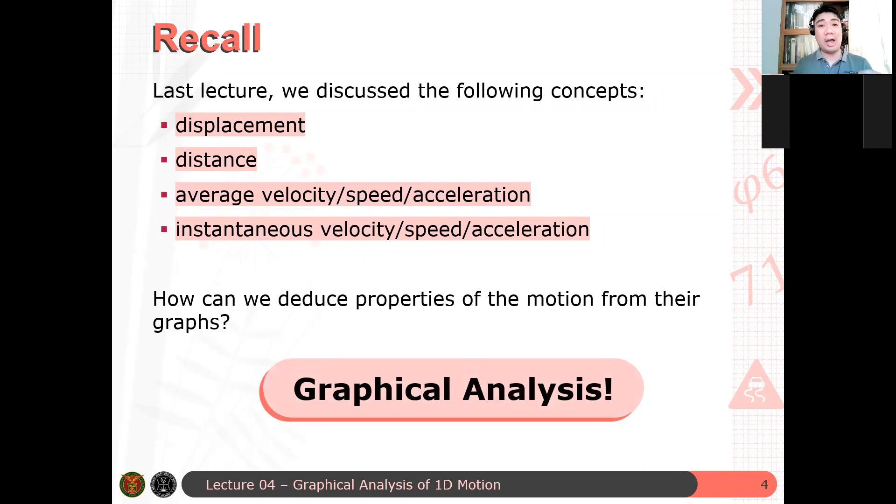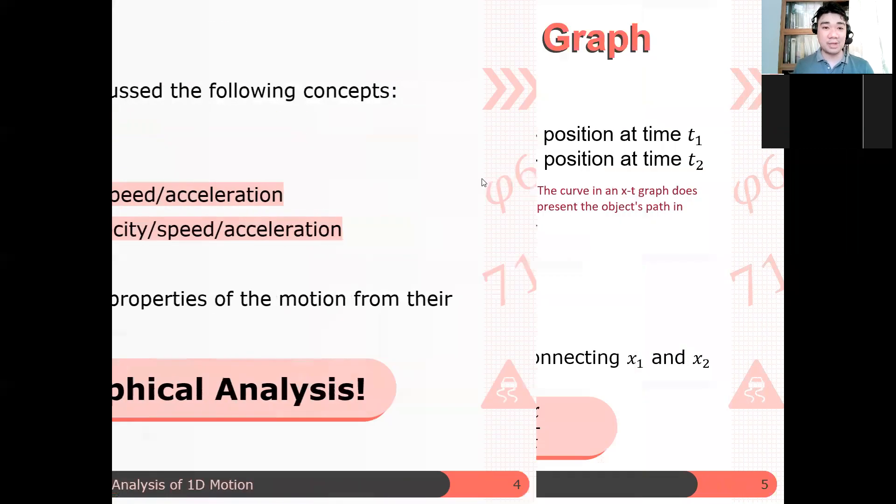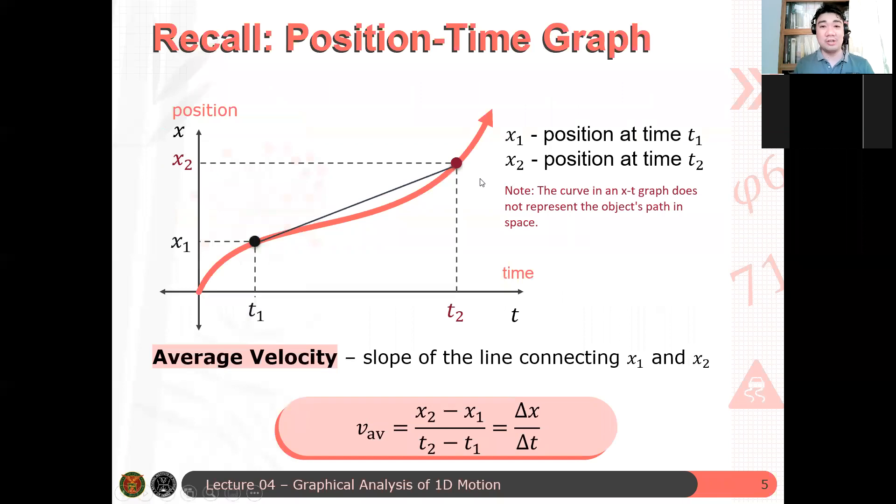And we do that using our graphical analysis. But before that, let's recall what are the properties of the position time graph, and what are the quantities that we can determine from the Xt graph and the Vt graph? Kung naalala nyo from previous lecture, dun sa mga umattend ng lecture kahapon, or dun sa mga nakapanood na ng video na in-upload ko kahapon. So here, here's just a recall.